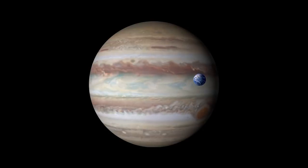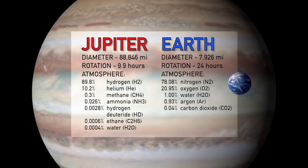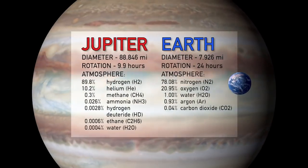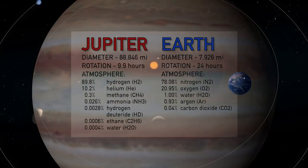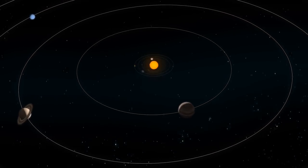Fluid mechanics is hopefully the same everywhere in the universe, but Jupiter and Earth are very different. Jupiter is much bigger, it rotates a lot faster, they're made of different material, and Jupiter is much further away from the Sun than the Earth is.